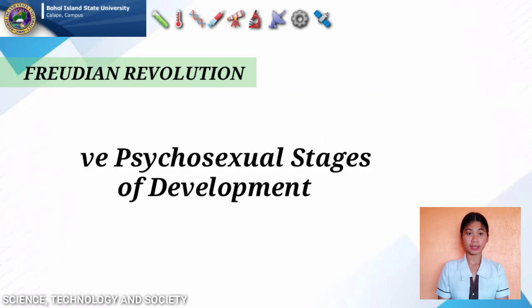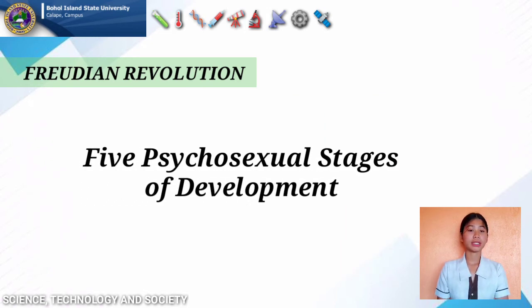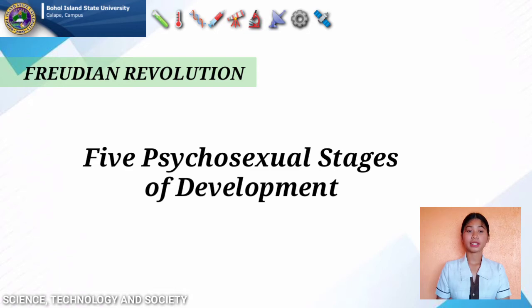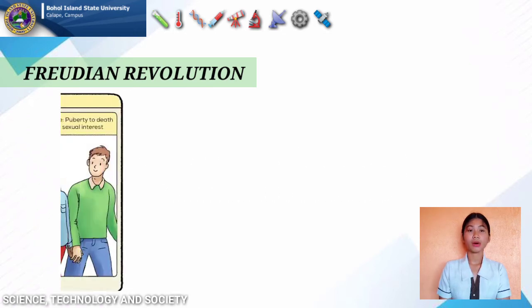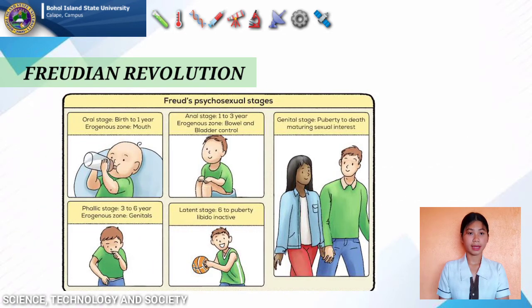Another theory that influenced society involves certain stages of development. Freud discussed the importance of early childhood experiences at each stage. The five psychosexual stages of development are: the oral stage, anal stage, phallic stage, latency stage, and genital stage. The oral stage ranges from 0 to 1 year old and focuses on pleasure centered on the mouth, such as sucking, biting, and chewing.